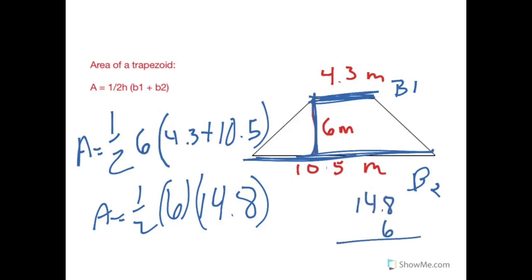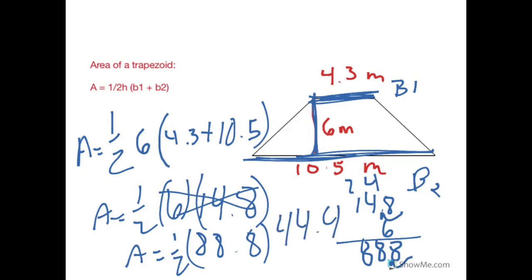14.8 times six. Six times eight, 48. Six times four is 24, plus four is 28. Drop the eight, carry the two. Six times one is six, plus two, 8.88. I've got one decimal move, so I've got 88.8. When I multiply these two together, area equals one-half. We know this is a really easy one to do. One-half times 88.8. Well, half of eight is four, so we're going to end up with 44.4 meters squared.